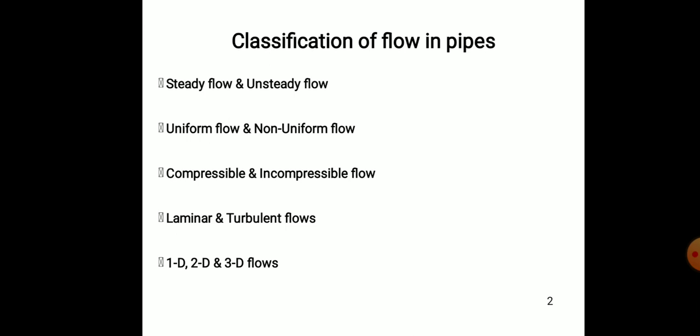Laminar flow is that type of flow in which the flow has a well-defined path and the flow lines are parallel to each other. Turbulent flow is that type of flow in which the flow lines are not parallel to each other and the direction is zigzag. 1D flow is one-dimensional flow in the X direction, 2D in X and Y directions, and 3D in X, Y and Z directions respectively.